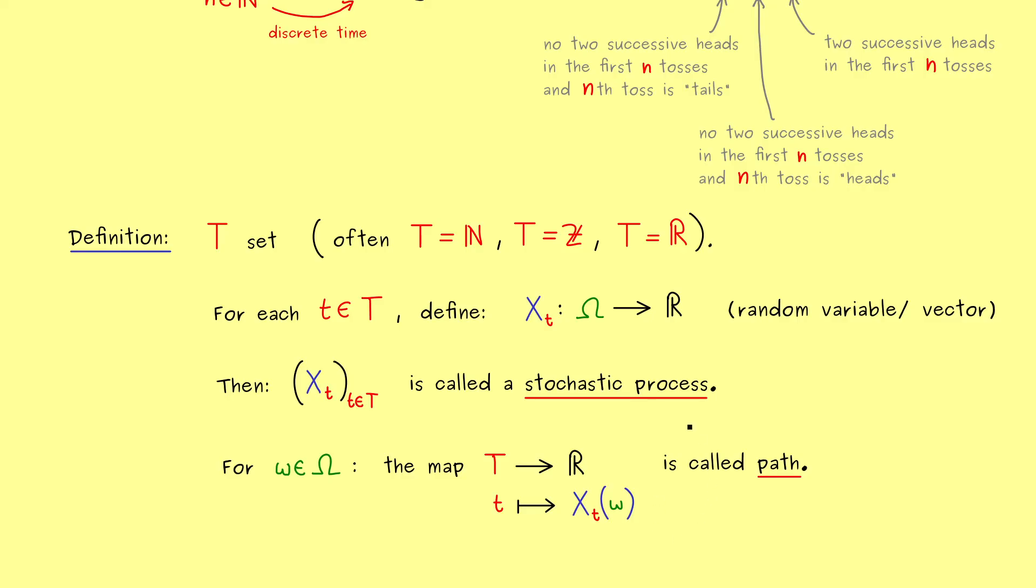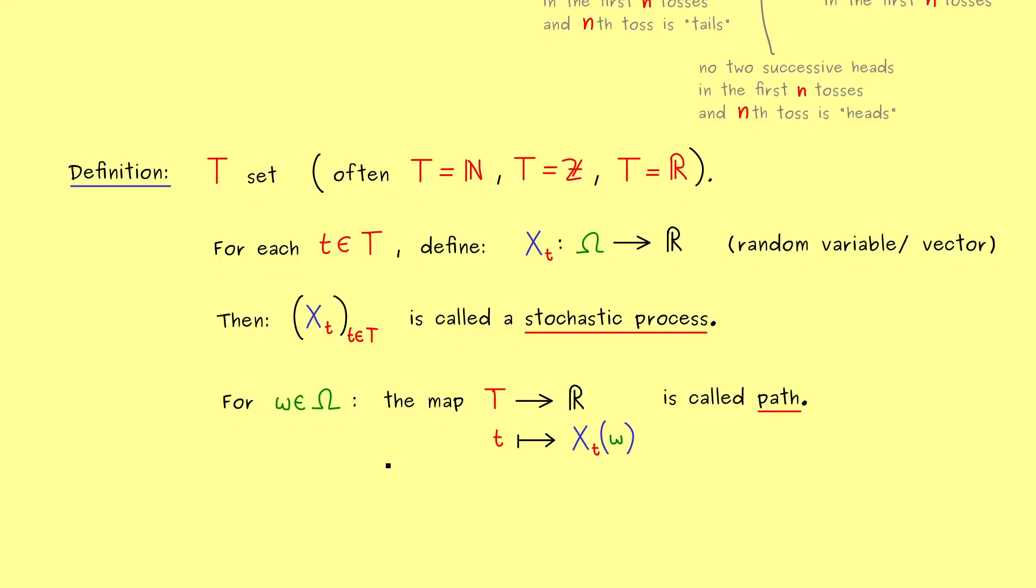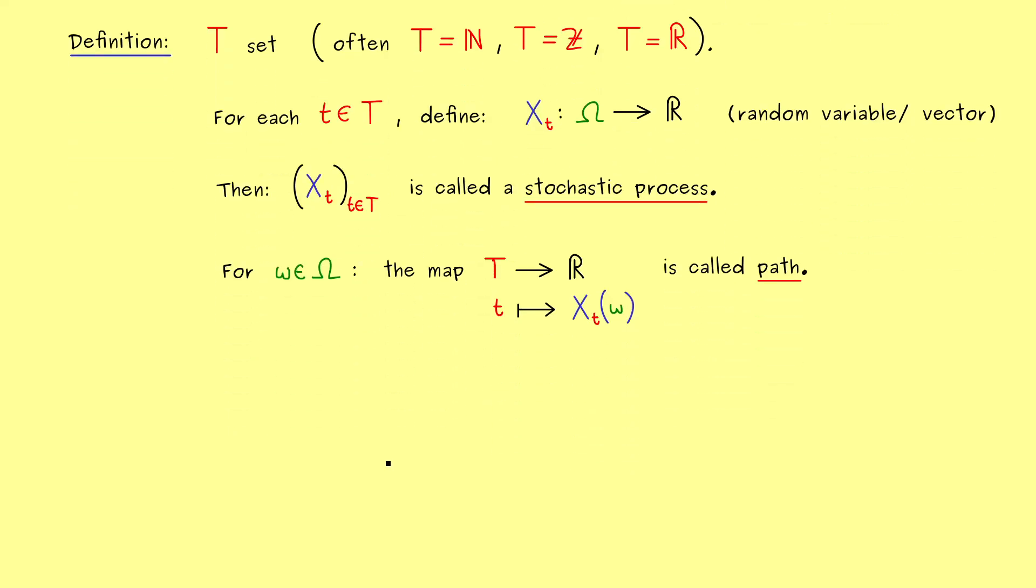Now there exist a lot of different names for this nice function. But we keep it simple and just call it path. Simply because it gives you a path this omega takes over time. So there we have it. This is the definition of a stochastic process. And you immediately recognize it's a very general thing.